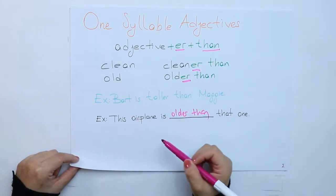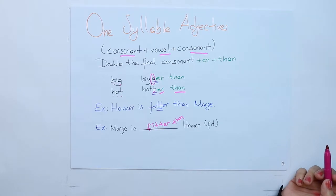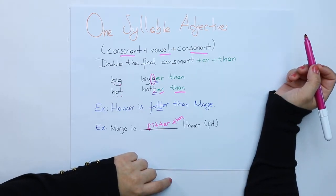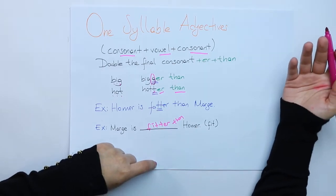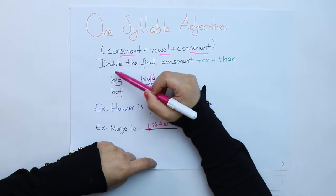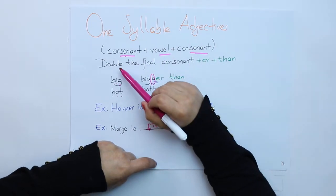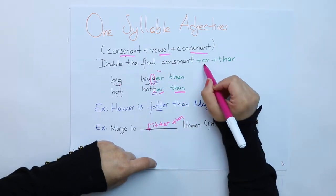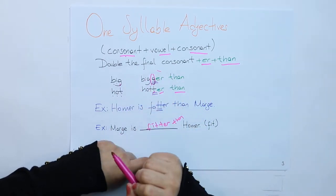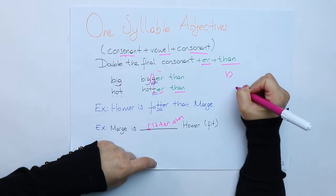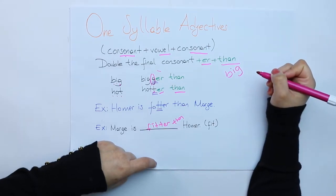Another important point for one syllable adjectives is if my adjective ends with or has got consonant, vowel, and consonant order for the last three letters, double the final consonant and then add ER.